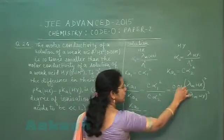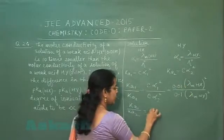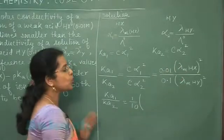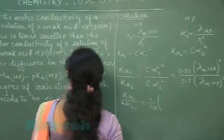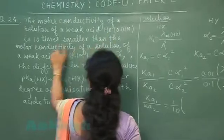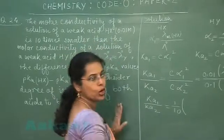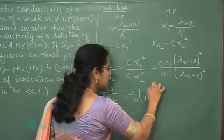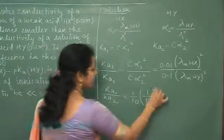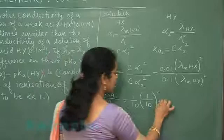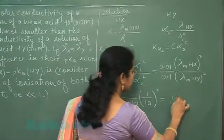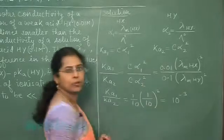This is 0.01 by 0.1, 1 by 10, lambda HX. Molar conductivity of HX, solution of a weak acid HX is 10 times smaller. इसके value 10 times smaller है. So this is 1 by 10. इसका square कर दिया. Ka1 upon Ka2, this is coming out to be 10 raised to power minus 3.